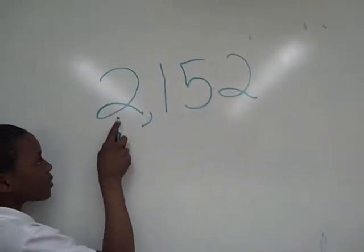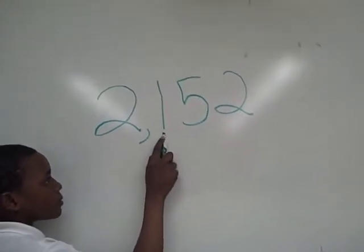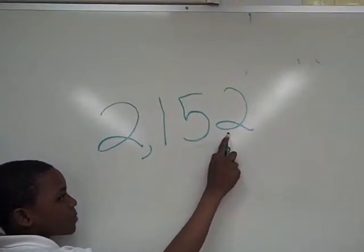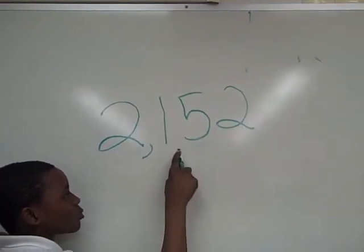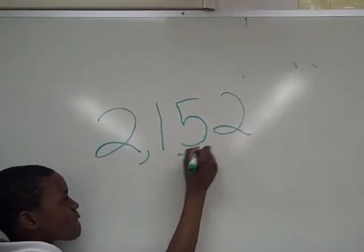The two is in the thousands place. The one is in the hundreds place, and the other two is in the ones place. What could the five be? The five could be the tens place.